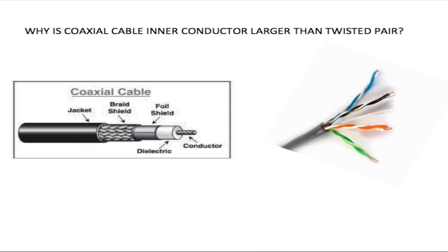This is Trevor from Telecom Training. One of my viewers recently asked me why the coaxial cable's inner conductor is larger than twisted pair. They are talking about the conductor that runs down the middle of the coaxial cable. I didn't really give it much thought before I was asked that question, and I dismissed it at first. But I kept thinking about it, so I finally decided to do a bit of research — and what I found was definitely not what I expected.